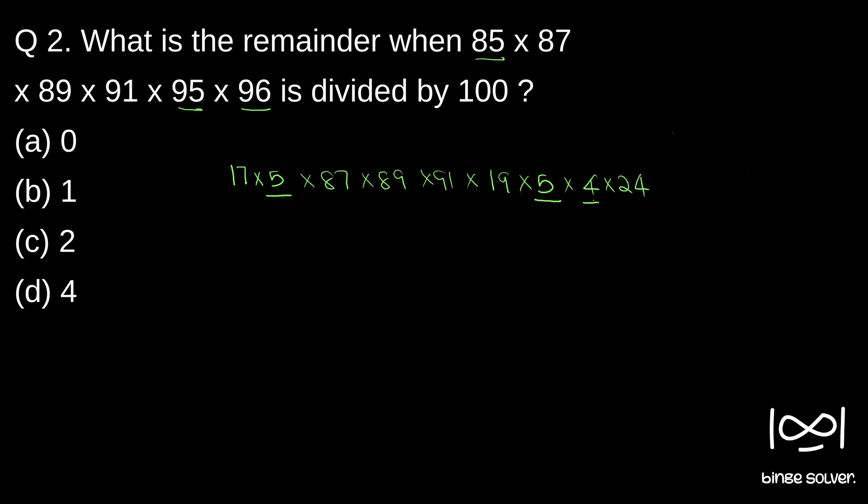5 × 5 × 4 is 100. So that means 17 × 87 × 89 × 91 × 19 × 24 × 100.